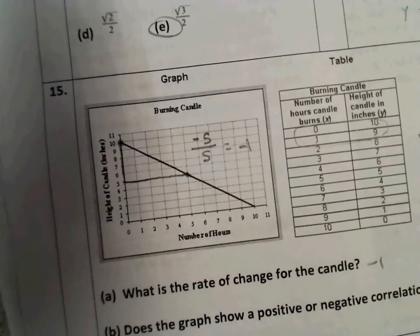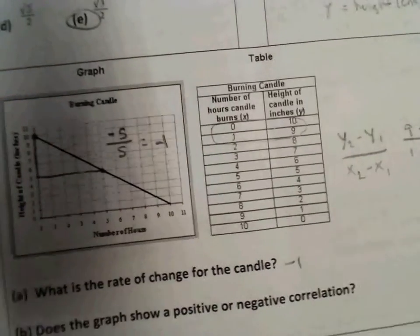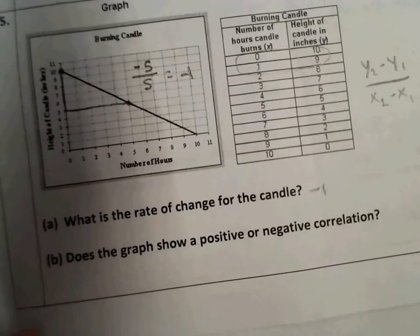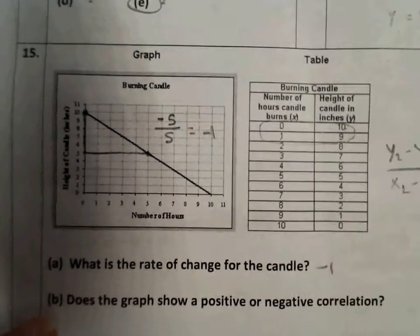Second part, does the graph show a positive or negative correlation? Now, you probably have already looked at this and said, well, that's easy. It's negative. It's going down. And you're right. It is negative.